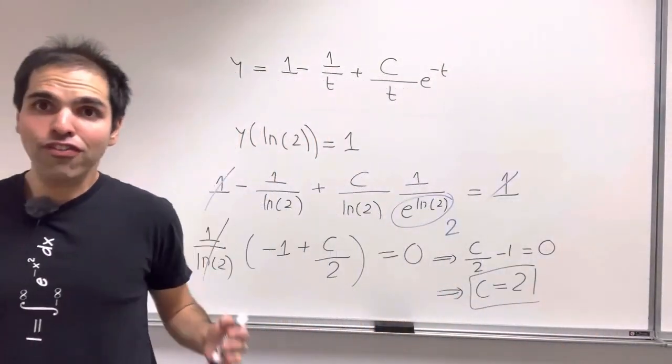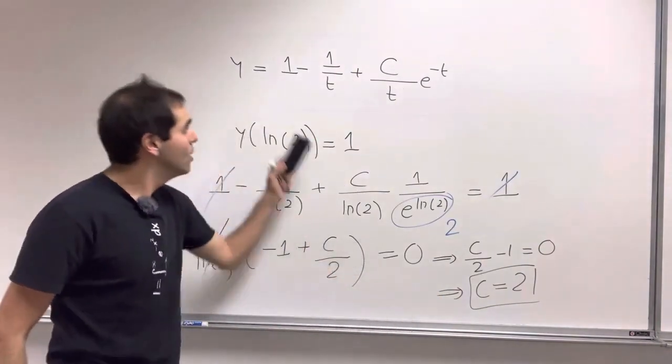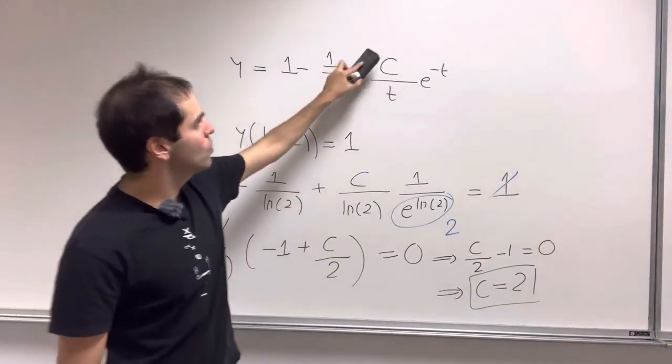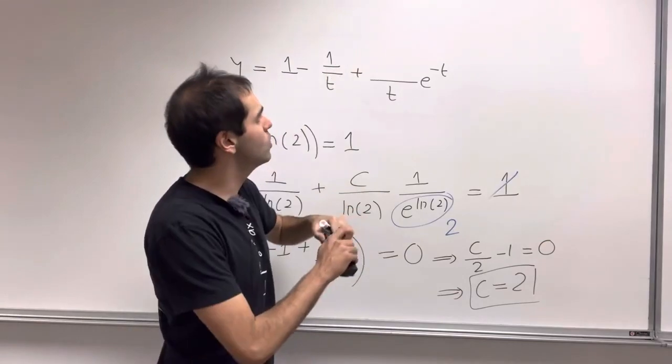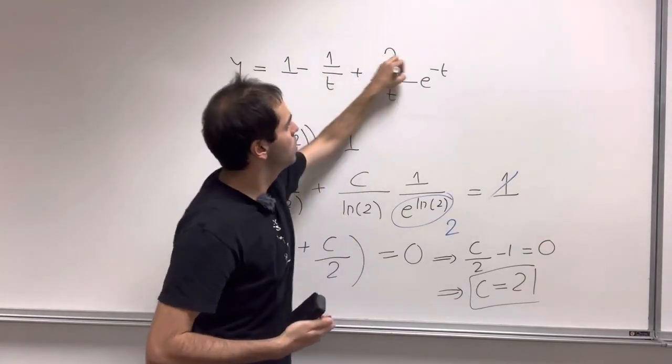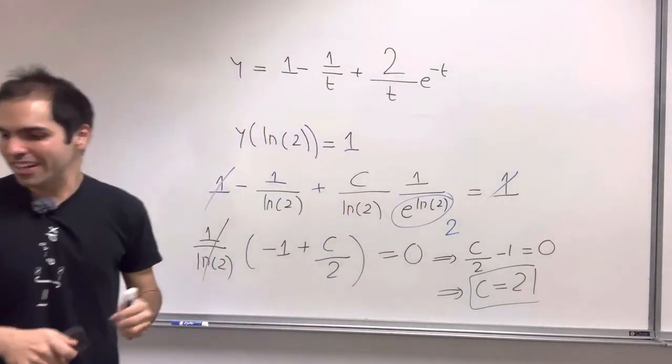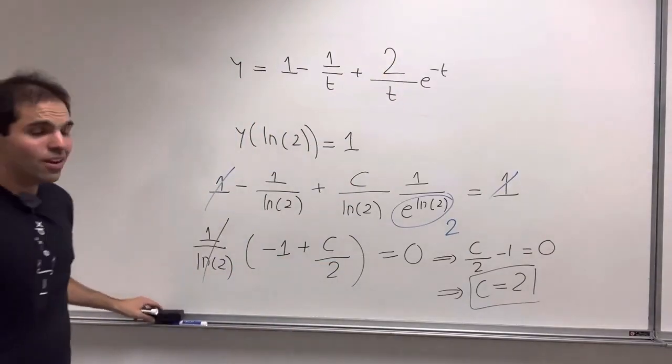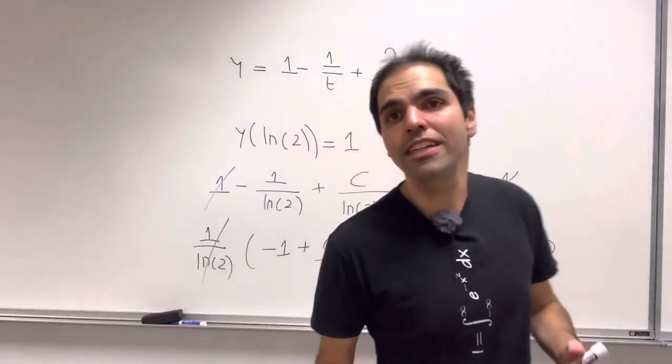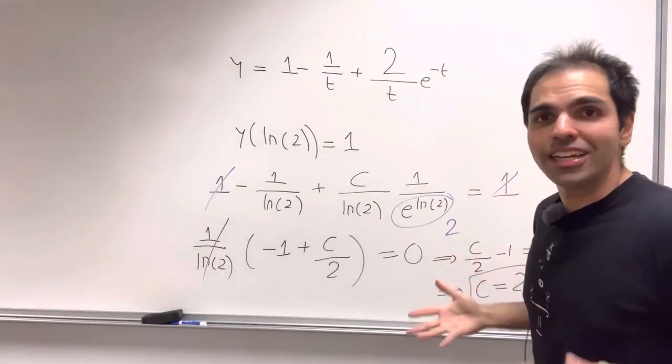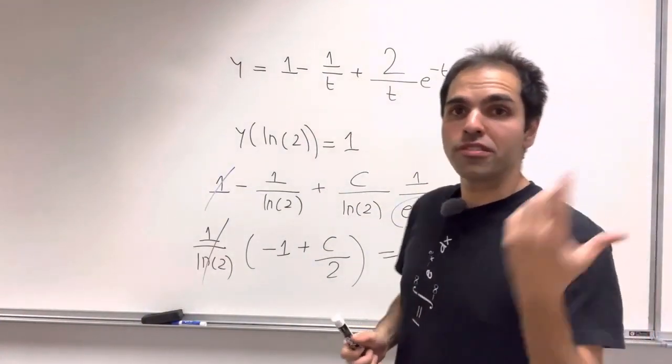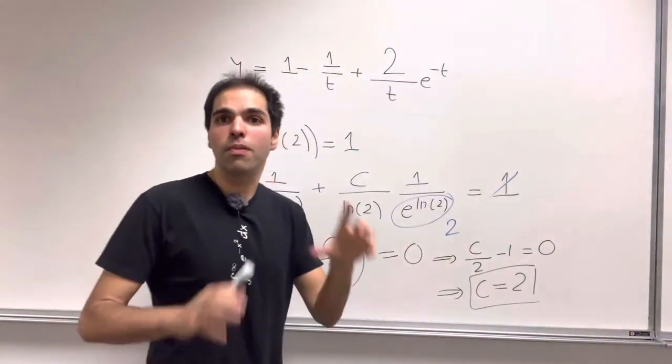And therefore, what is our solution in this case? Well, it's 1 minus 1/t plus 2/t*e^(-t). How nice is that?